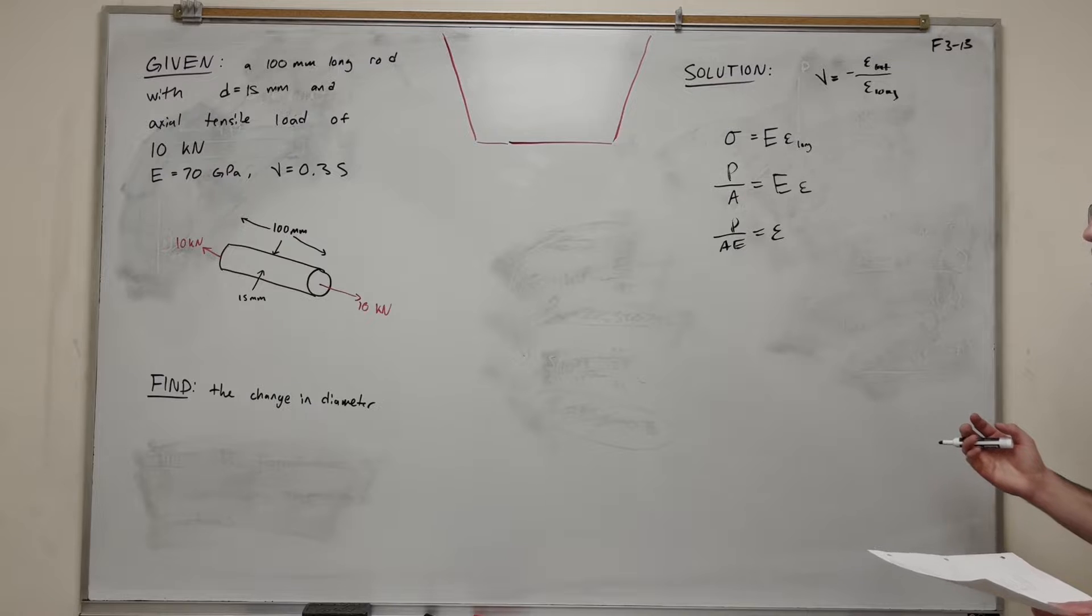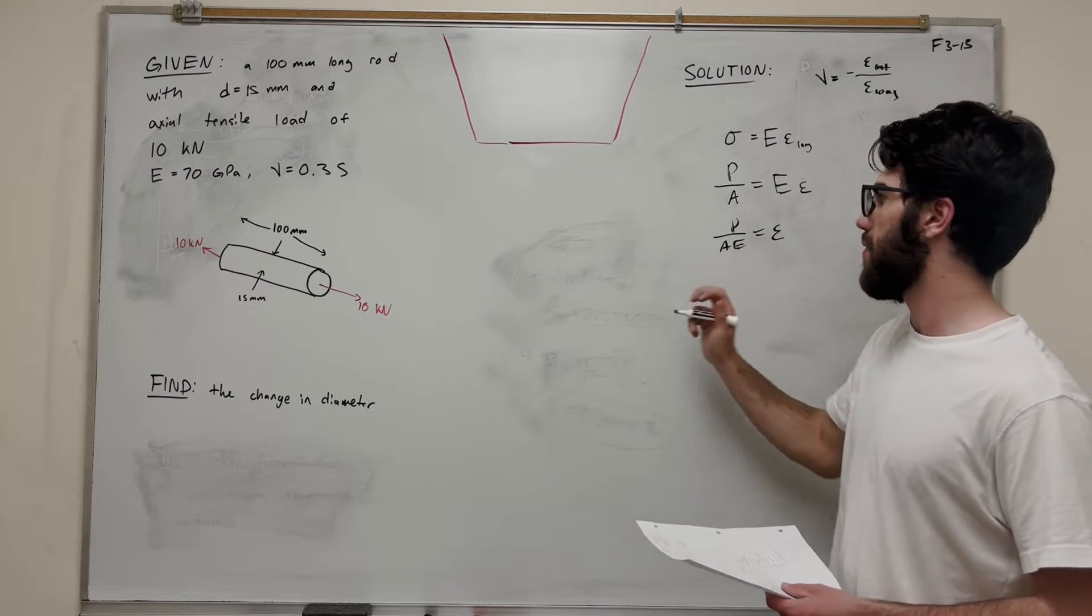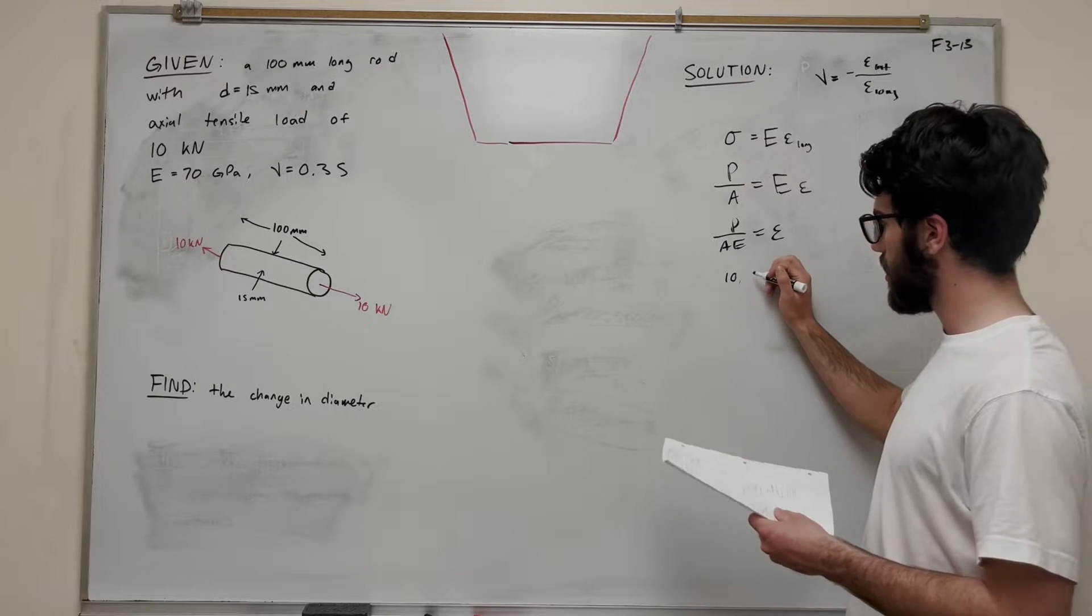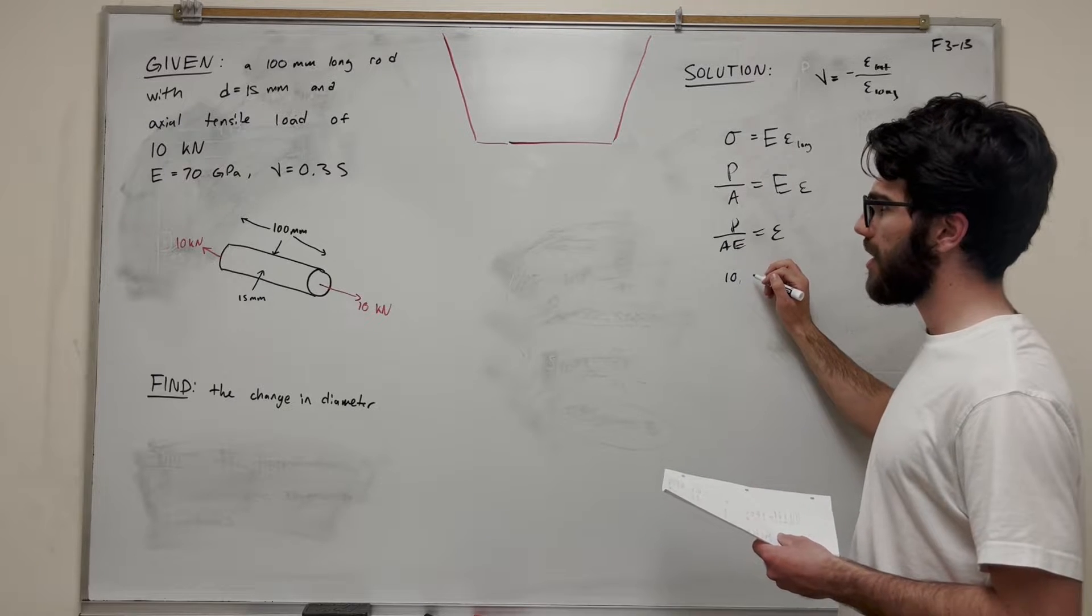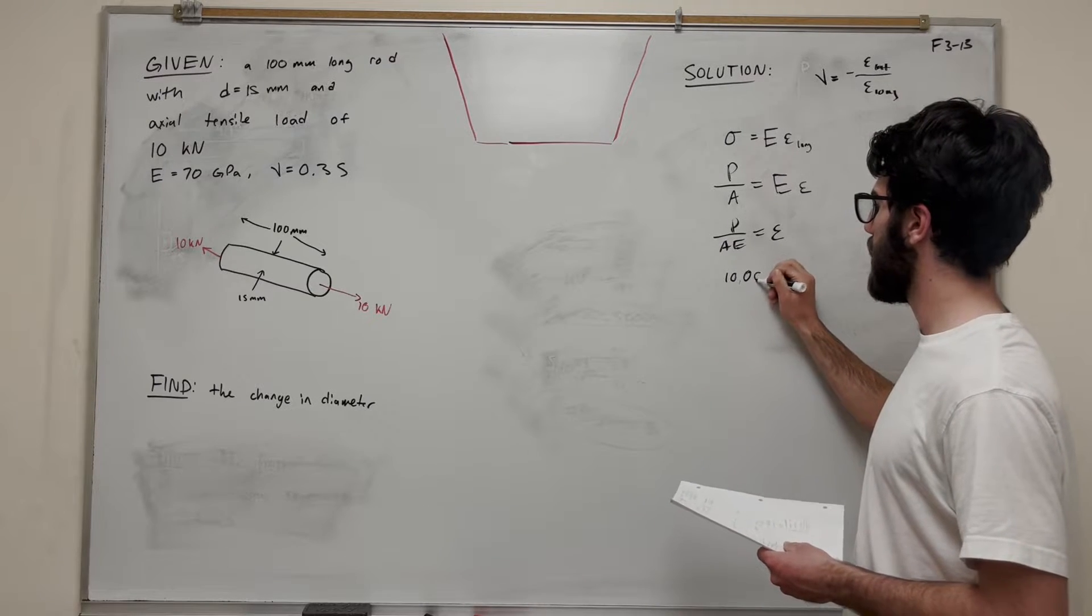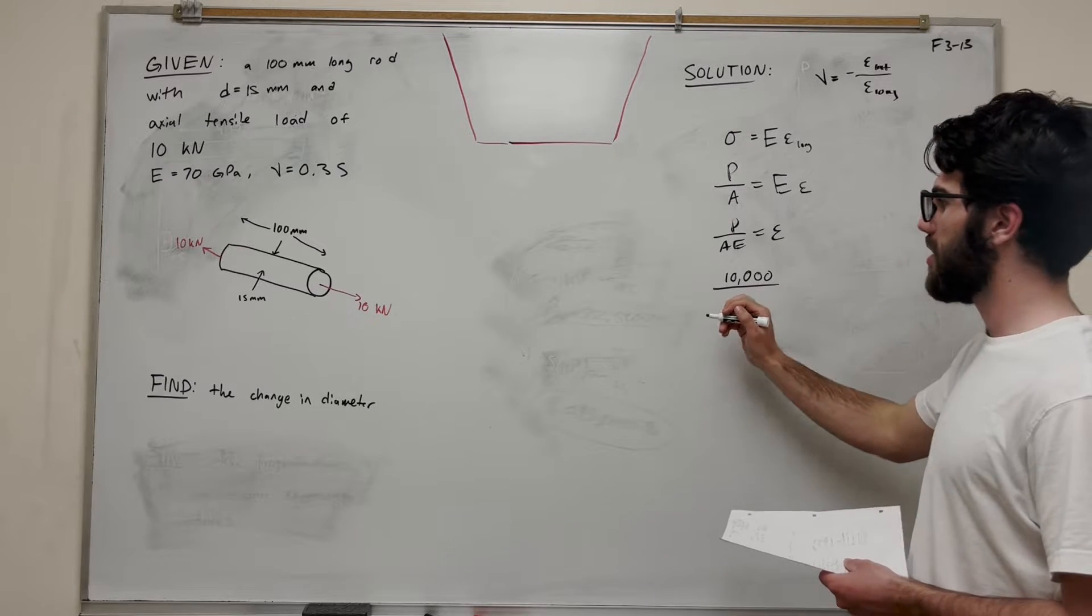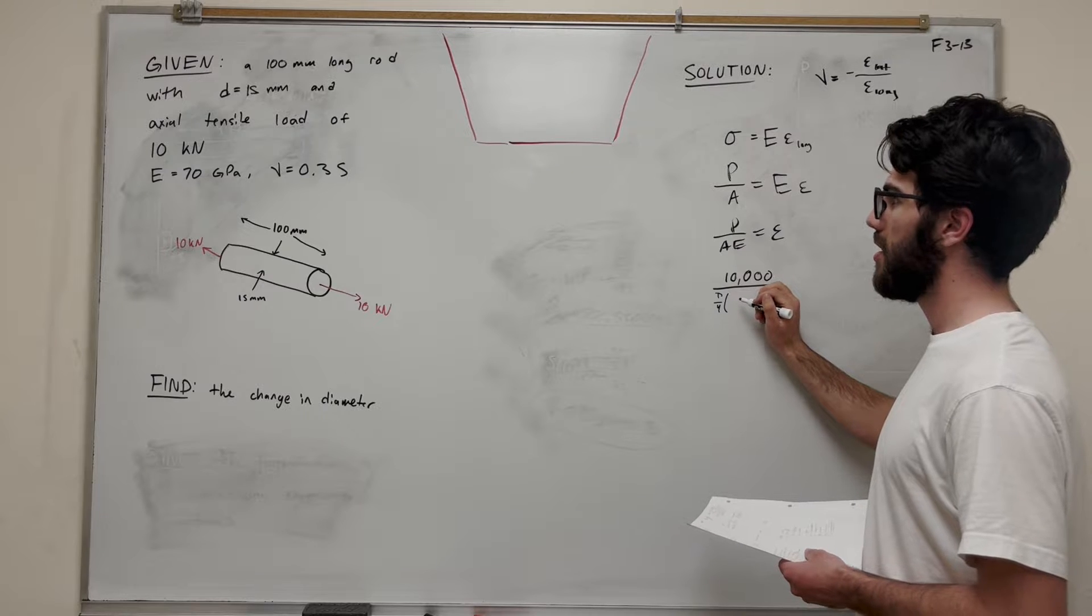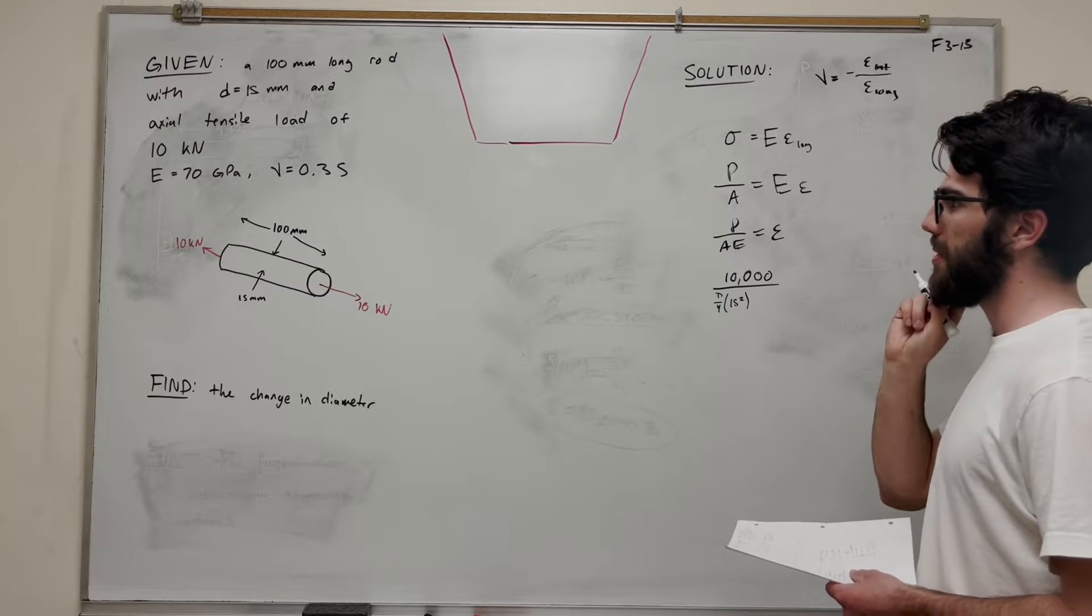So now we know all these things. Let's go ahead and solve this. P is that force, so it's 10,000 newtons over area. Area is going to be pi over 4 times diameter squared, so 15 squared. And then 70 GPa.